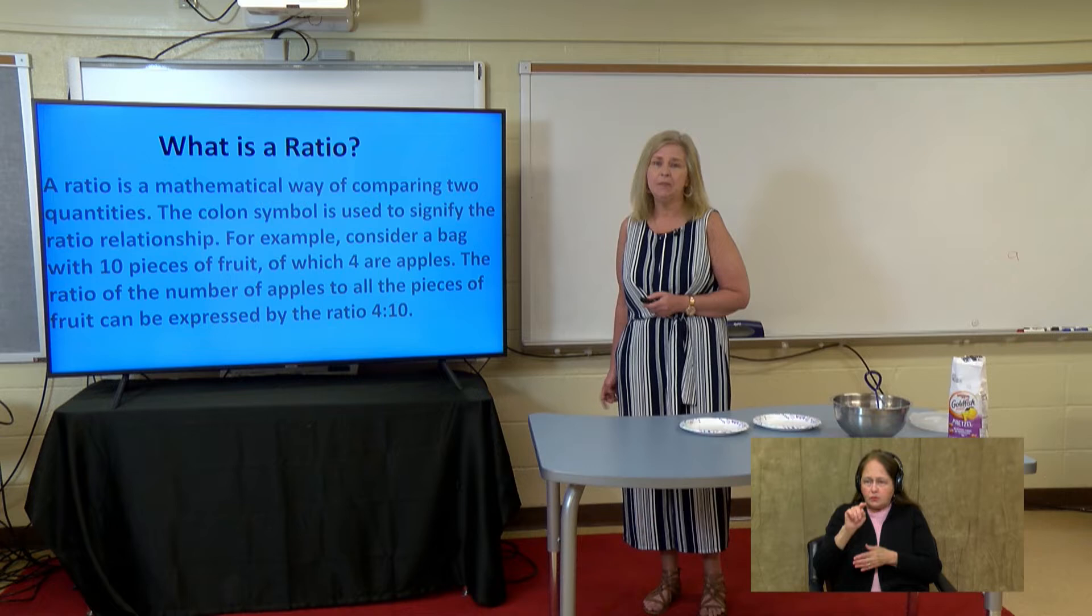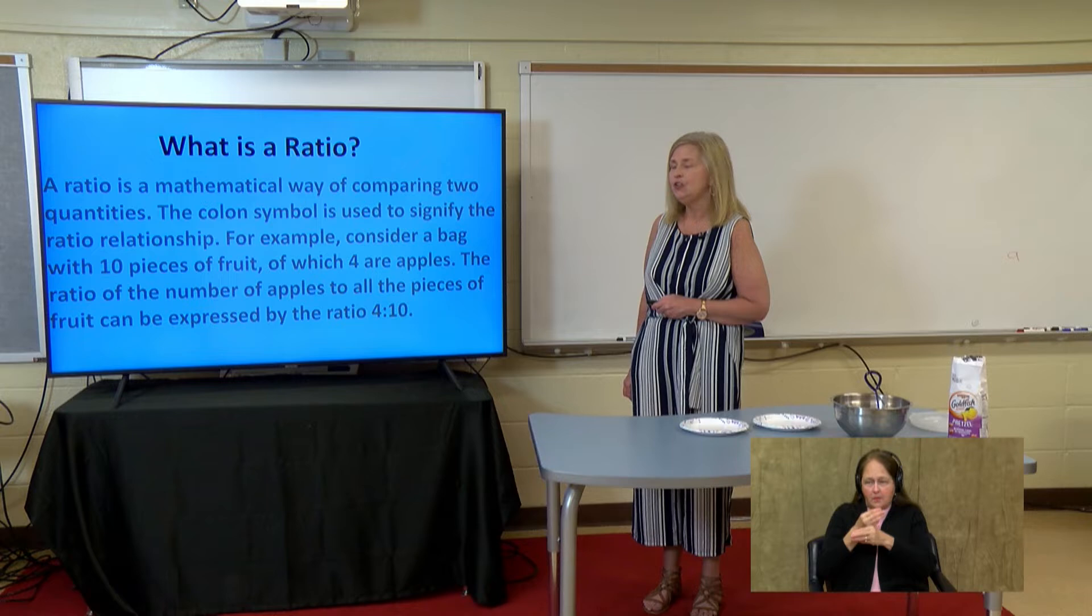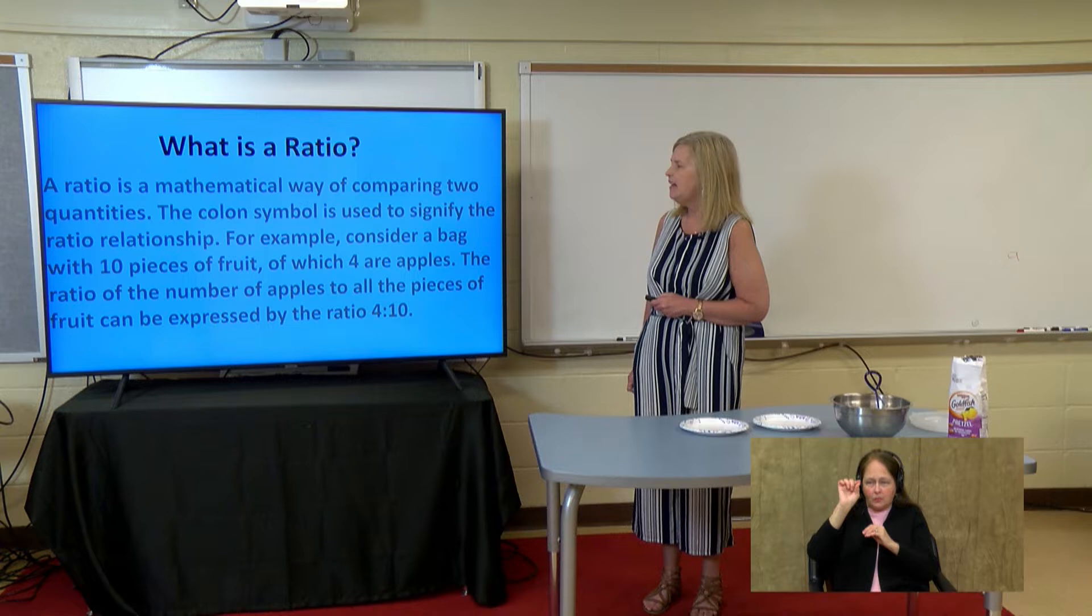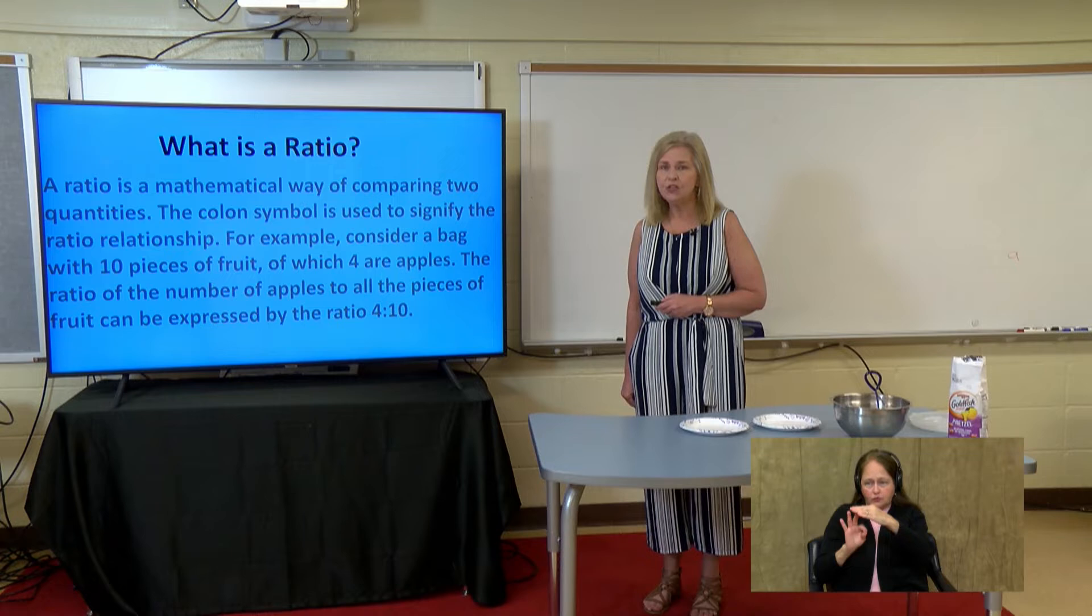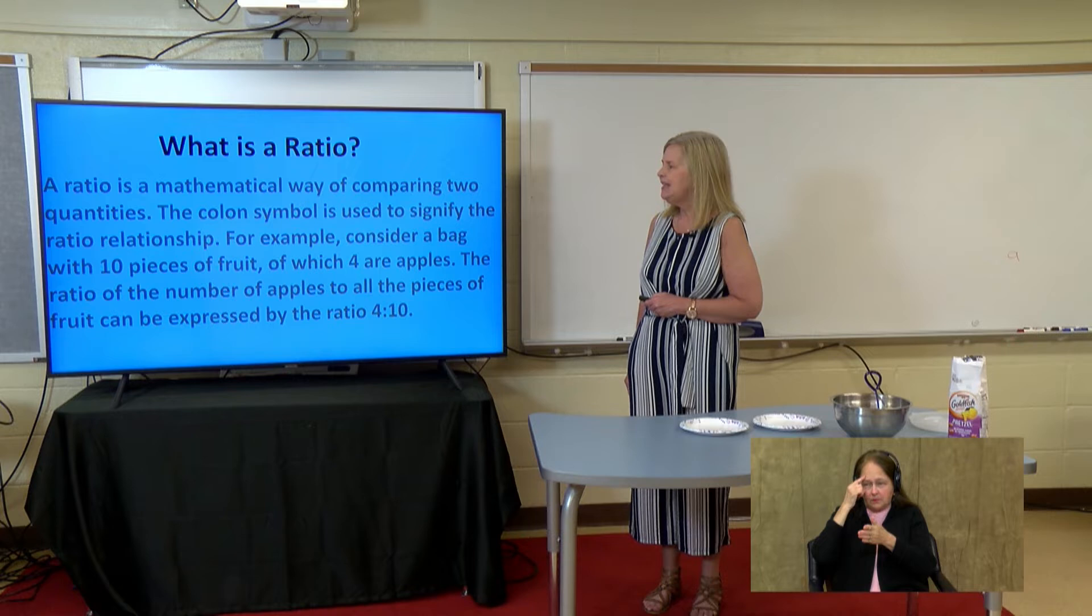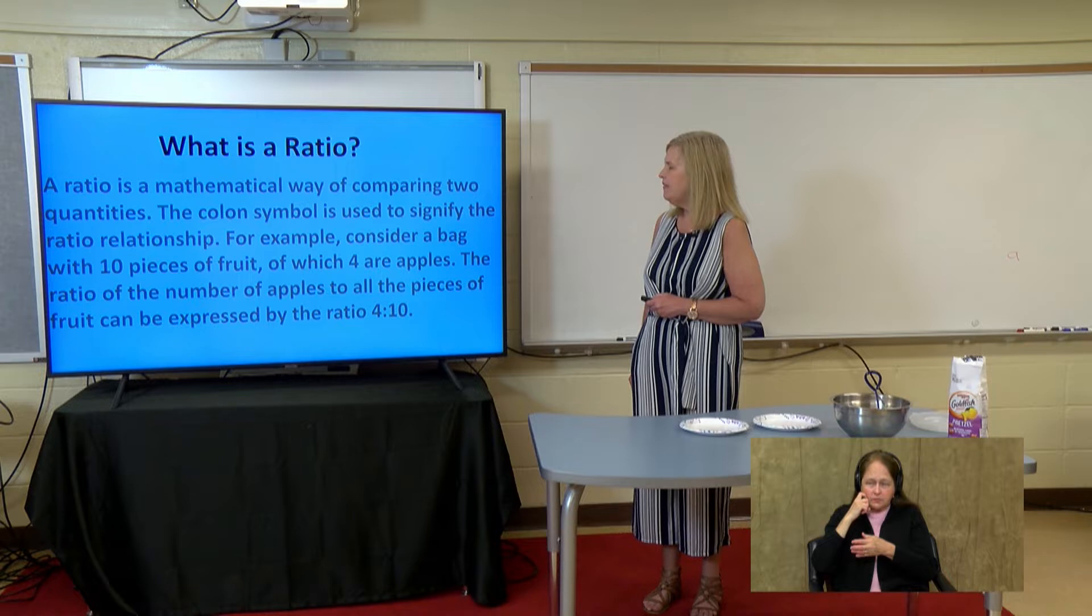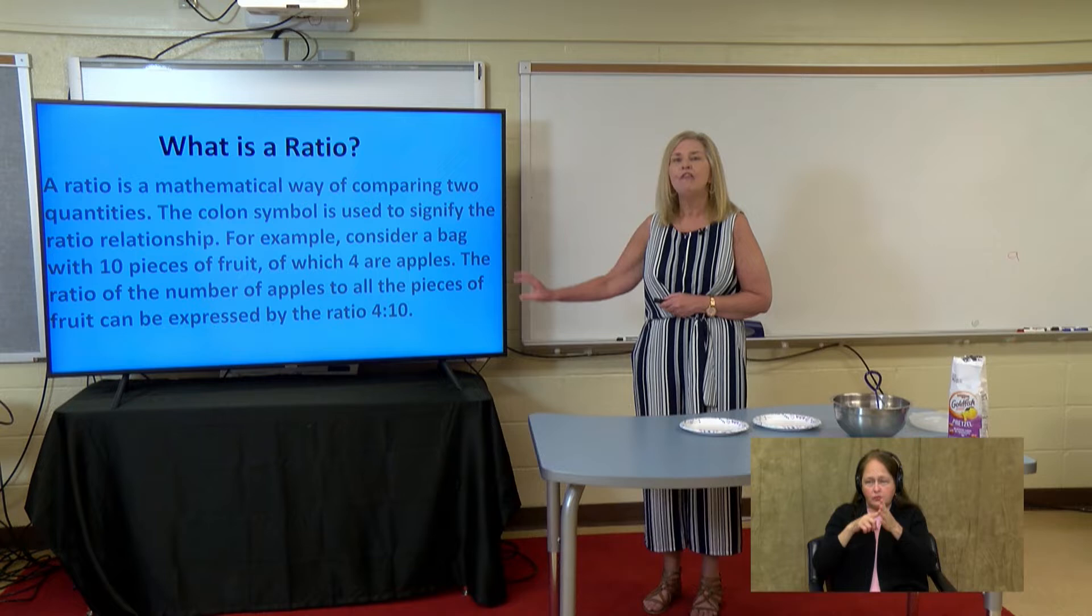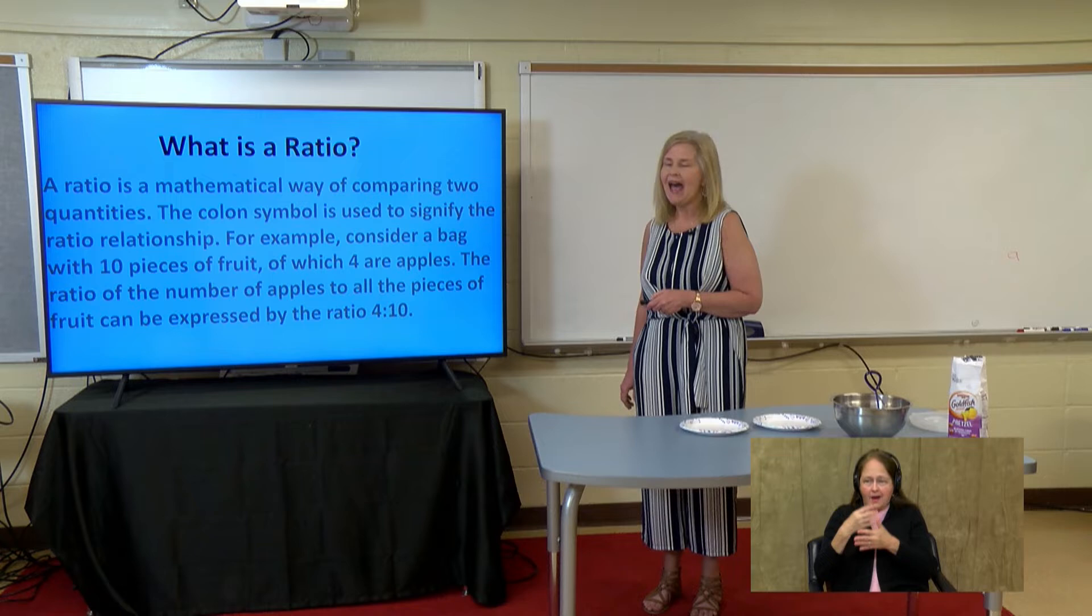What is a ratio? Well, we need to know that first before we can begin doing our activity. A ratio is a mathematical way of comparing two quantities or two numbers. The colon symbol is used to signify the ratio relationship, or you can use a fraction, or you can use the word 'to' or 'out of'. For example, consider a bag with ten pieces of fruit, of which four are apples. The ratio of the number of apples to all the pieces of fruit can be expressed by the ratio four colon ten. Four out of the ten are apples.